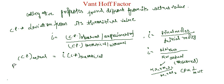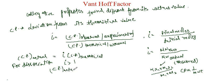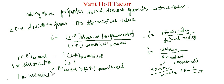For dissociation, the final moles increase from the initial moles. For example, calcium carbonate dissociates into calcium oxide plus CO2, so the number of moles in the container increases. In that case, i is greater than 1, so the actual colligative property is greater than the theoretical colligative property.